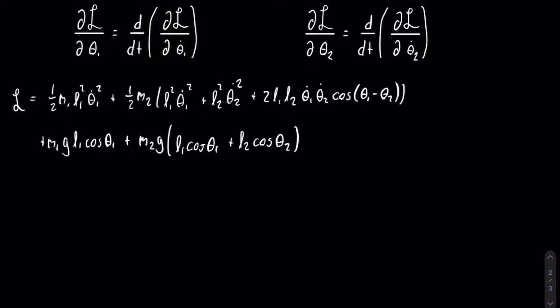This video is the second part on how to use Lagrangian mechanics to find the equations of motion for a double pendulum. If you didn't watch the previous video, I would suggest you do — the link is in the description. Above are the two equations that we will be using. We need two equations because there are two degrees of freedom in a double pendulum. In the previous video, we made the Lagrangian, and in this video we will use it to find the equations of motion.